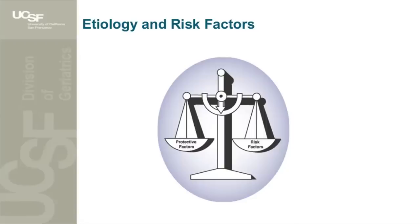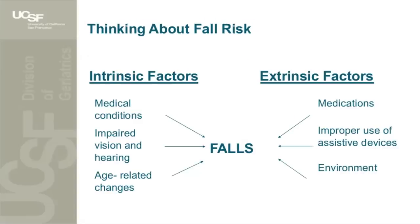Turning to etiology and risk factors. Often the treatment of fall-related injuries does not include thinking about the cause of the fall. Many studies have documented important risk factors, classified as either intrinsic or extrinsic. Intrinsic factors include medical conditions such as peripheral neuropathy, foot problems, arthritis, impaired vision or hearing, and age-related changes including increased reaction time and decreased reflexes. Extrinsic factors include medications — particularly those acting on the central nervous system — antihypertensives, improper use of assistive devices, and hazards in the environment.